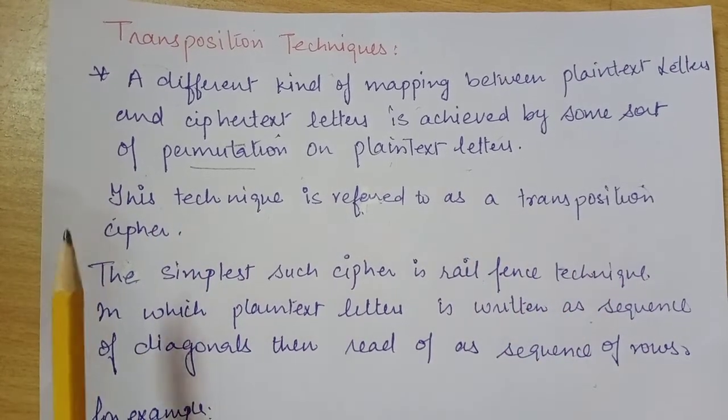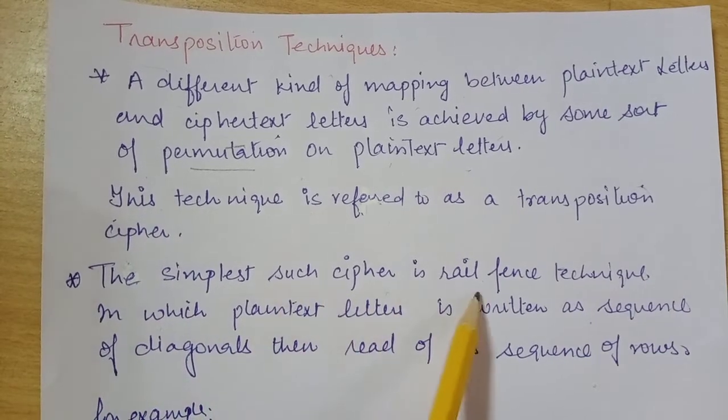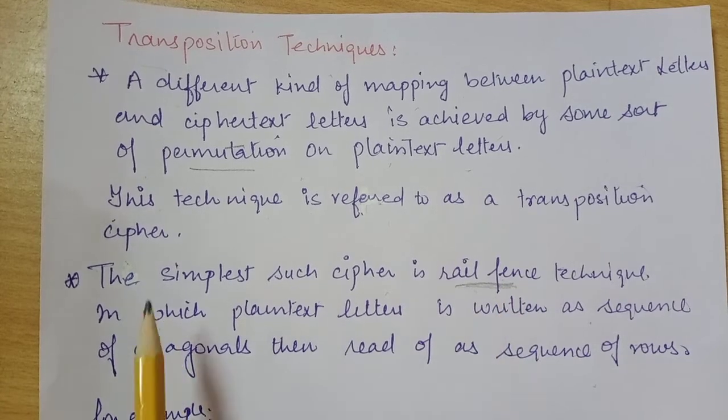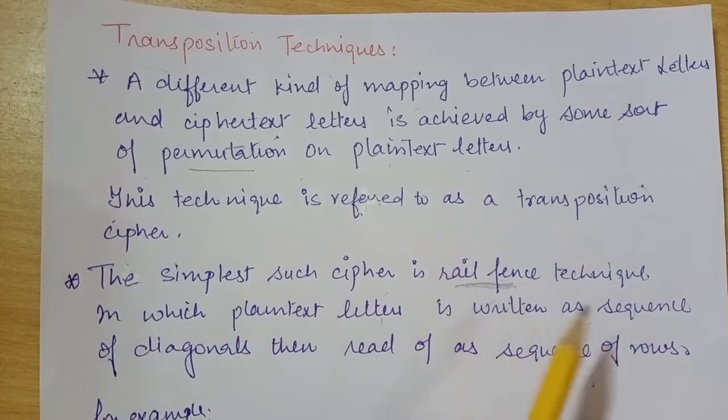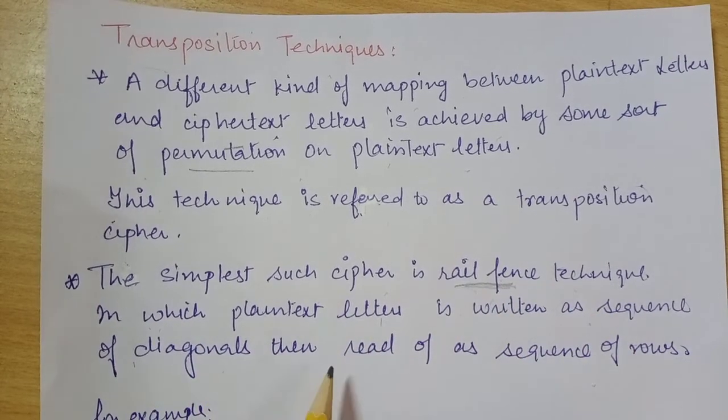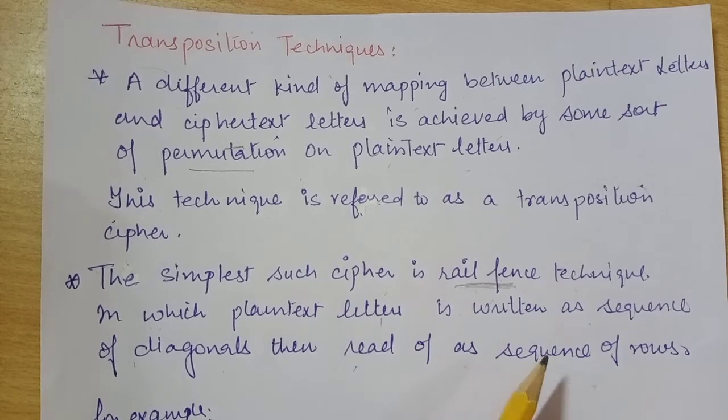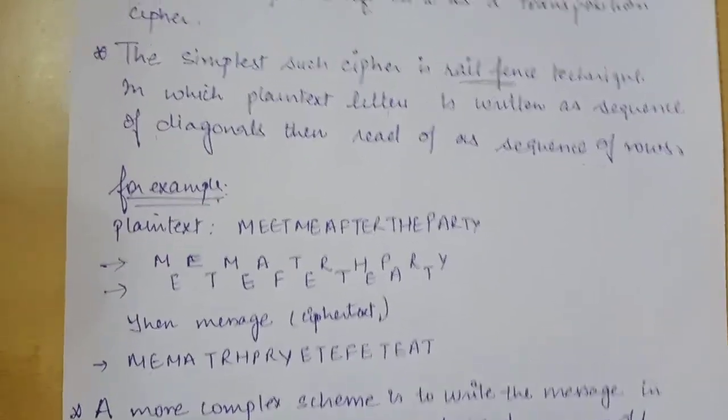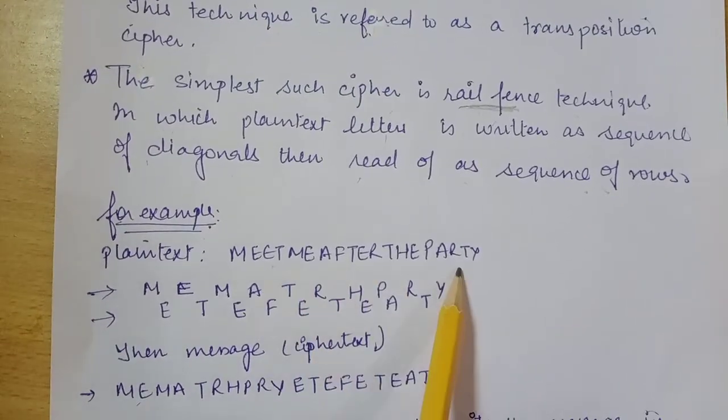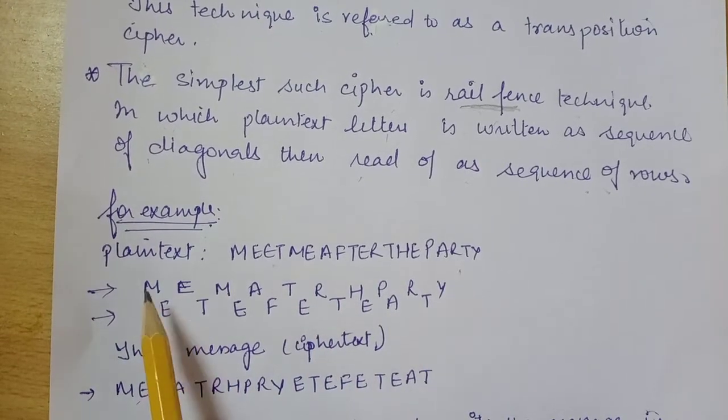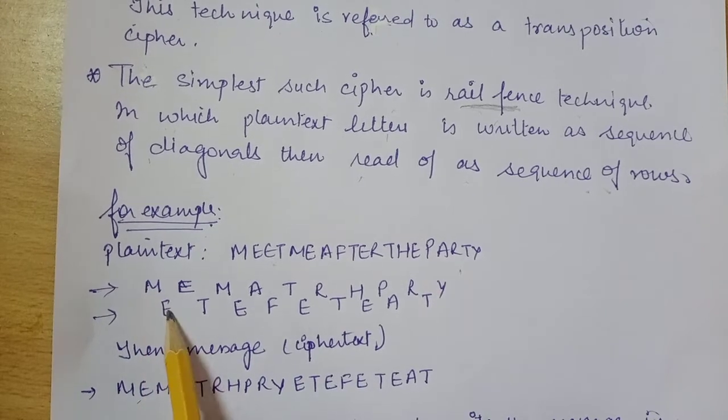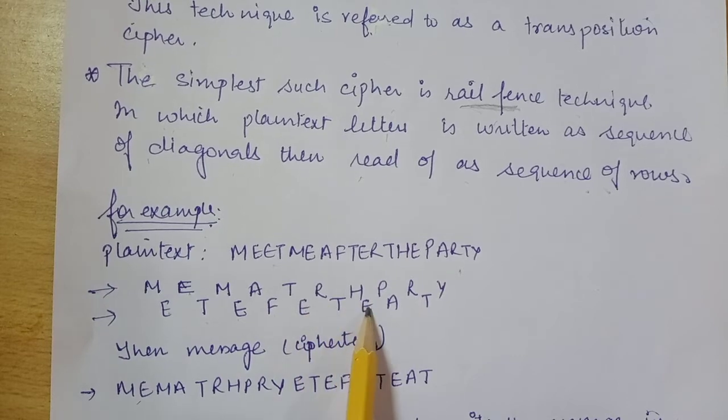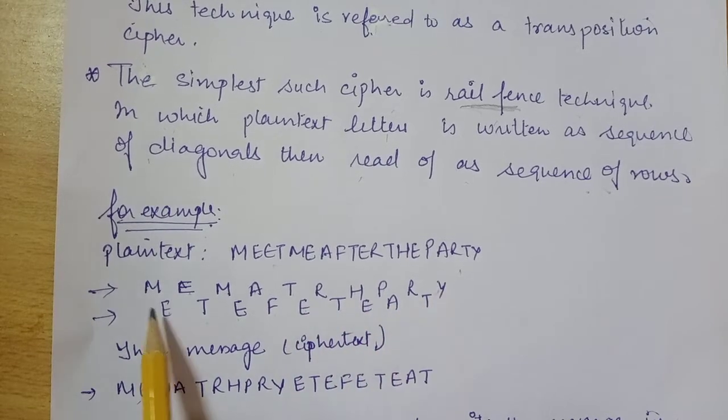This technique is referred to as transposition cipher. The simplest such cipher is rail fence technique in which plain text letters are written as a sequence of diagonals and read off as sequence of rows. For example, in this case let's say our plain text is 'meet me after the party'. So in this case diagonally we will write M E E M E A F T E R T H E P A R T Y.